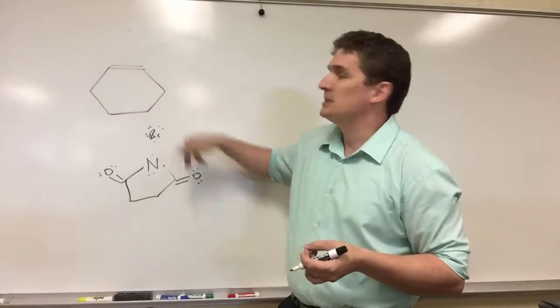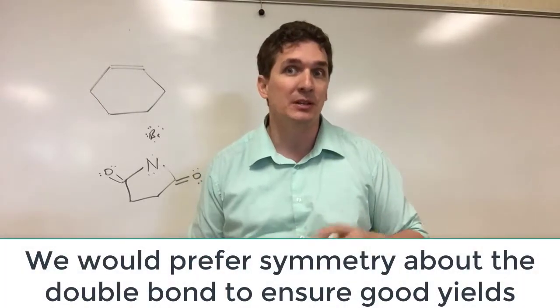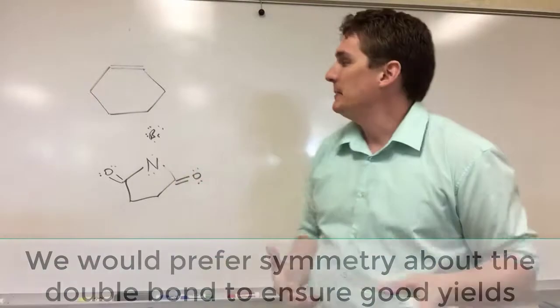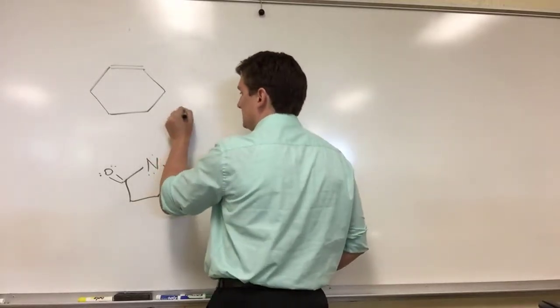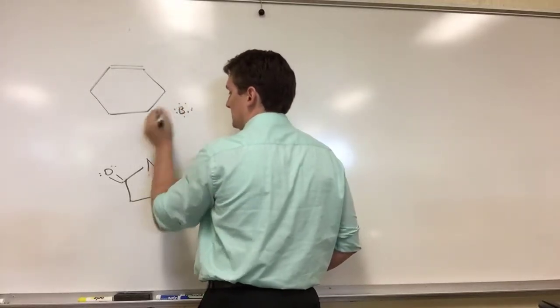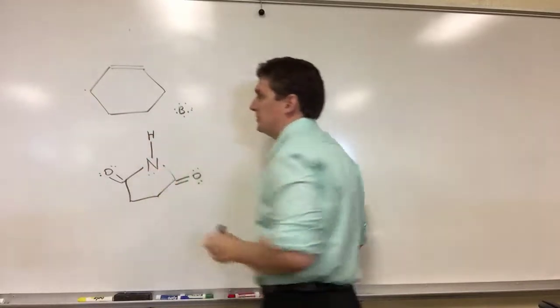Now ideally, what we want to work with is something that has symmetry along the double bond, because this is going to help us ensure that we're getting what we want. But what will happen is that first it will attract a hydrogen. So it'll take off a hydrogen and create a radical.